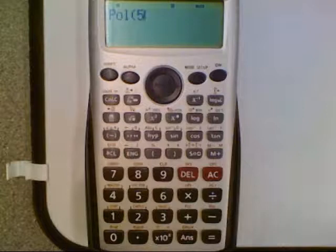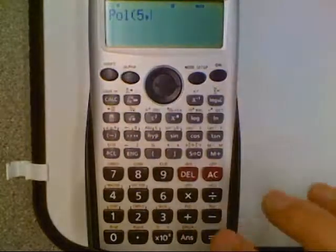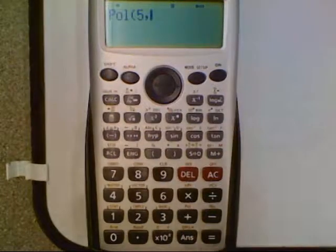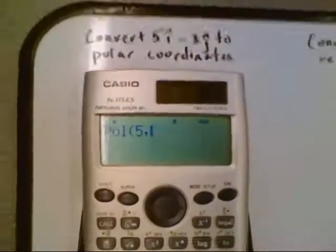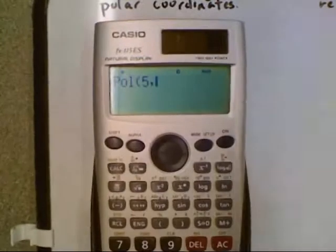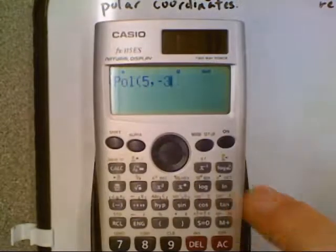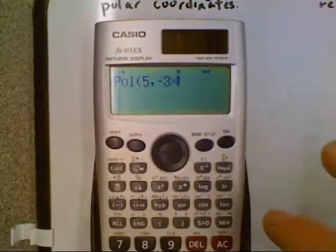We're converting to polar coordinates. We want to put the i coordinate which was 5, comma, and then the j coordinate. If you remember in our example here 5i minus 3j, since it's minus 3j we want to put negative 3, and it's the j coordinate.